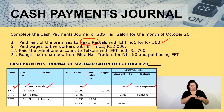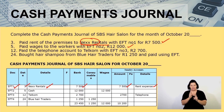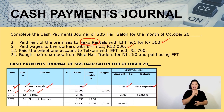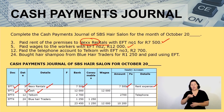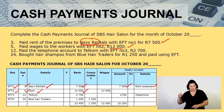The next transaction: paid wages to the workers, 12,000. That is EFT two, date is the fifth. On the bank column we record 12,000, and that 12,000 goes into the wages column.